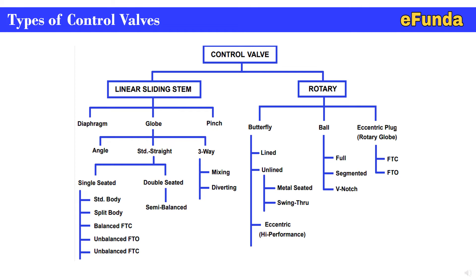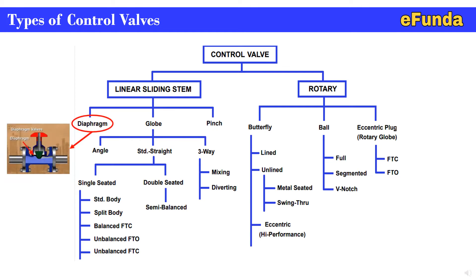Now we will see each major type briefly. For the diaphragm type, one can refer to the animation where diaphragm valve operation is shown. It is the simplest tight-shutoff, isolated type — ideal for corrosive, slurry, and sanitary services. One can see how the flow is being cut off when the valve is closed.